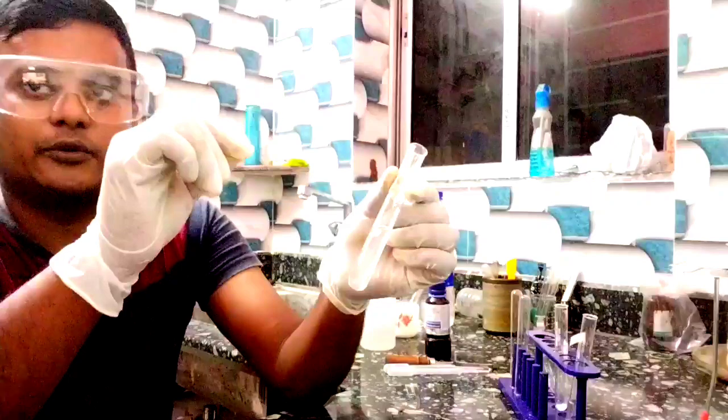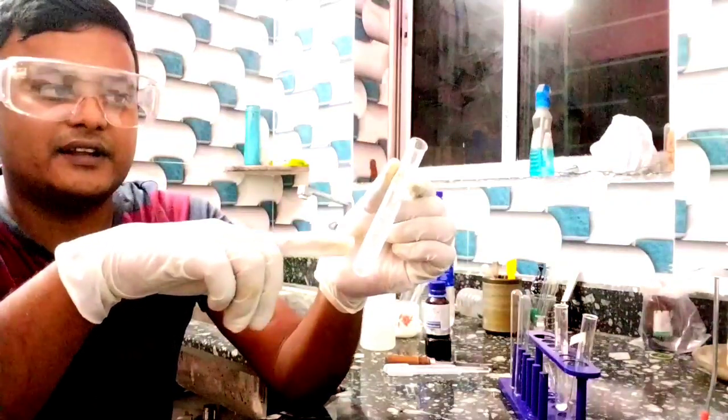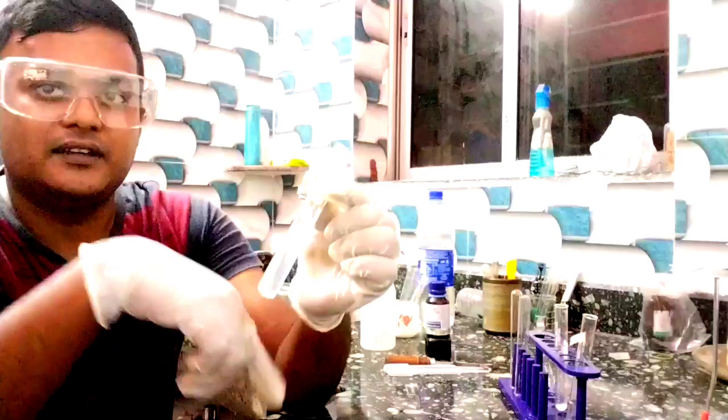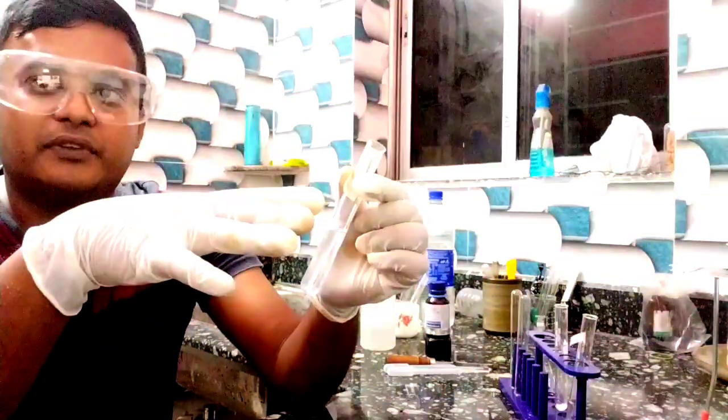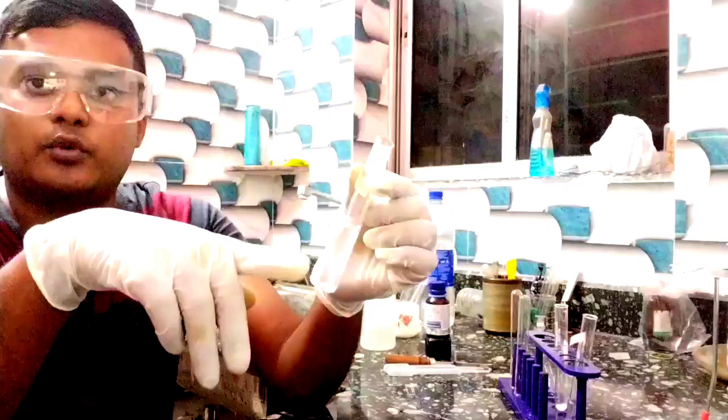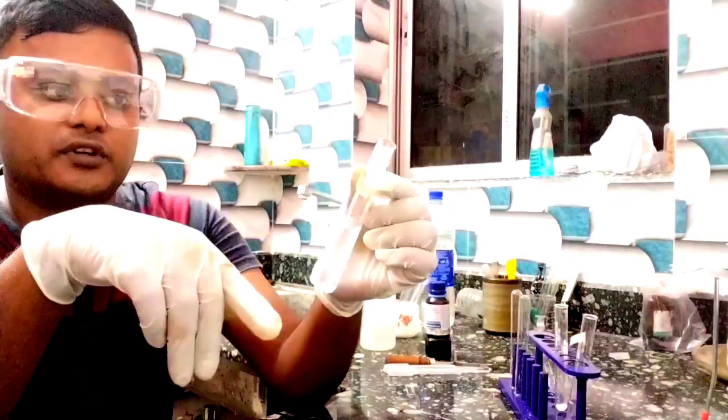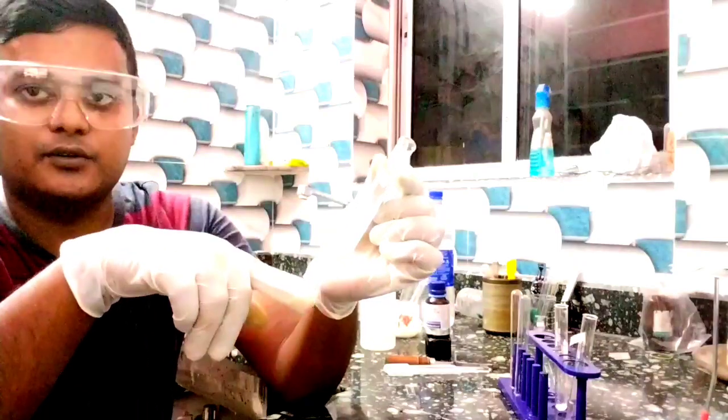If we heat it, it will dissolve completely because we know that lead chloride is soluble in hot water. This is quite specific - lead chloride is soluble in hot water. So that little bit of white color is due to chloride present in normal tap water. Don't get confused.